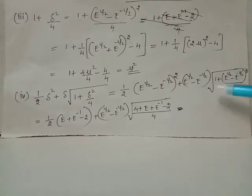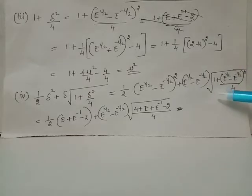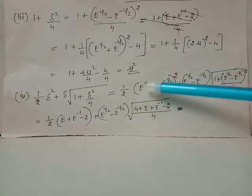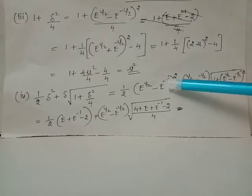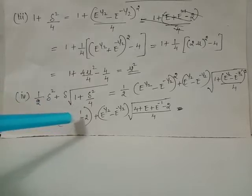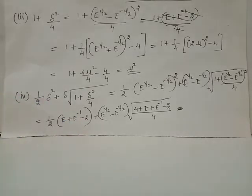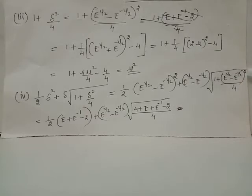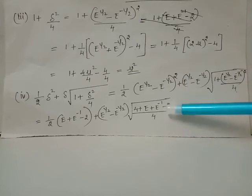Thus we obtain this expression. Here we have (e raised to 1/2 minus e raised to negative 1/2) the whole square, expanded using the formula for (a minus b) whole square, and we get e plus e-inverse minus 2. Similarly, the term (e raised to 1/2 minus e raised to negative 1/2) whole square inside the square root also expands using the same formula and becomes e plus e-inverse minus 2.